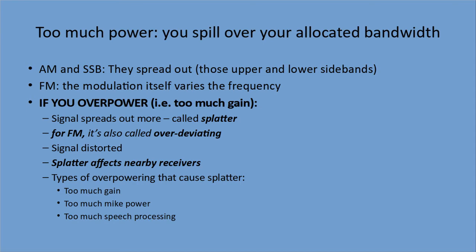If you put up too much power, you can spill over your allocated bandwidth. AM and single sideband tend to spread out — it's not frequency modulation, it's supposed to be on one frequency, but the nature of the electronics, the noise, and things generated means it spreads out a bit. FM — the very process of creating FM signals modulates or changes the frequency. If you overpower, also known as putting in too much gain, your signal spreads out beyond the frequency you intended, and that's called splatter. For FM, it's also called over-deviating, because you're varying your frequency beyond the allowed range. It causes signal distortion.